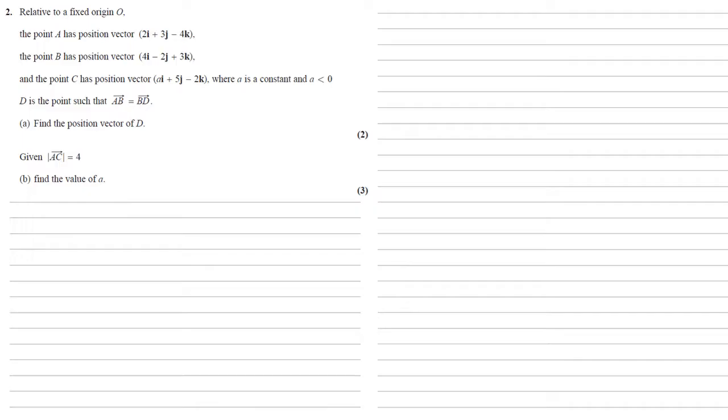We're told that point A has position vector 2i plus 3j minus 4k, and point B has position vector 4i minus 2j plus 3k.